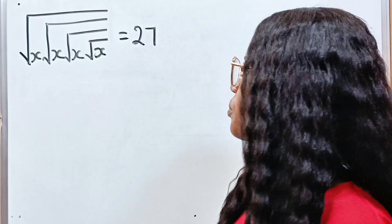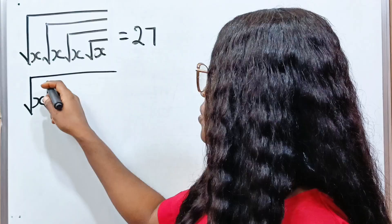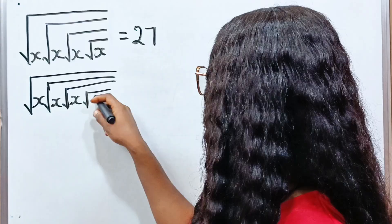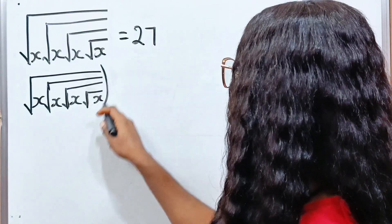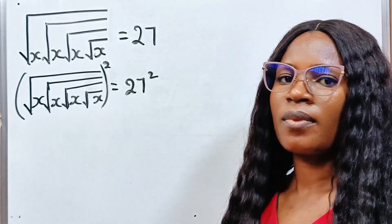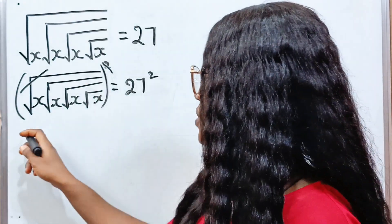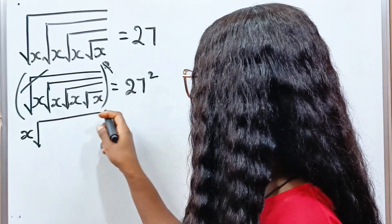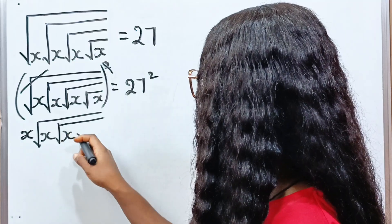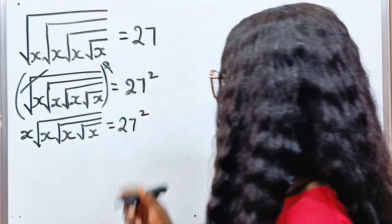We square both sides first. So we have square root of x, square root of x, square root of x, square root of x — and we square. That is equal to 27 squared. Now remember, squaring will remove the root sign, but only the first one. And we are left with x times square root of x, times square root of x, times square root of x, equal to 27 squared.